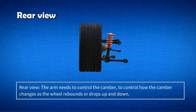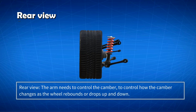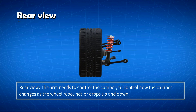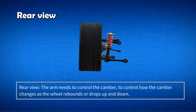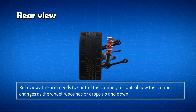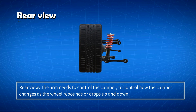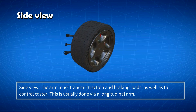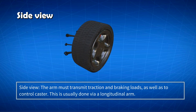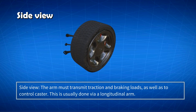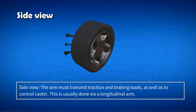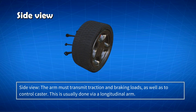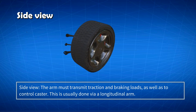In the rear view, the arm needs to control camber — specifically how the camber changes as the wheel rebounds or drops up and down. In the side view, the arm must transmit traction and braking loads, as well as control caster. This is usually done by a longitudinal arm.